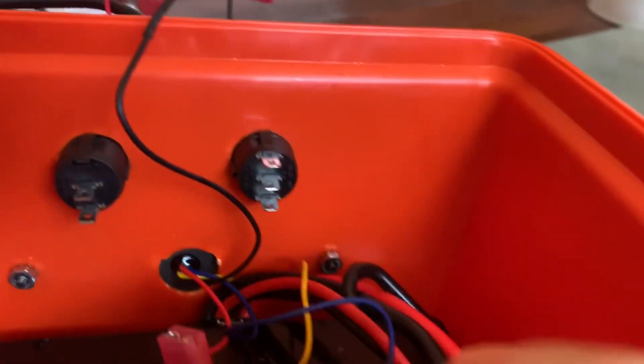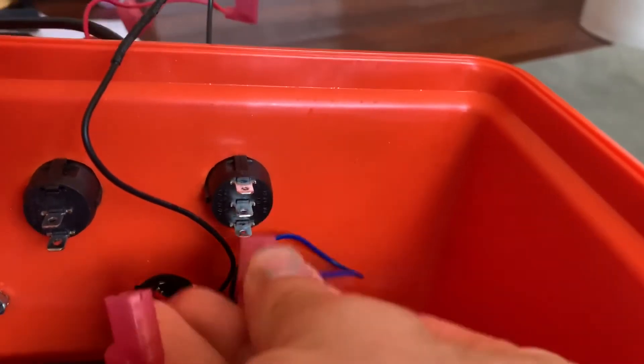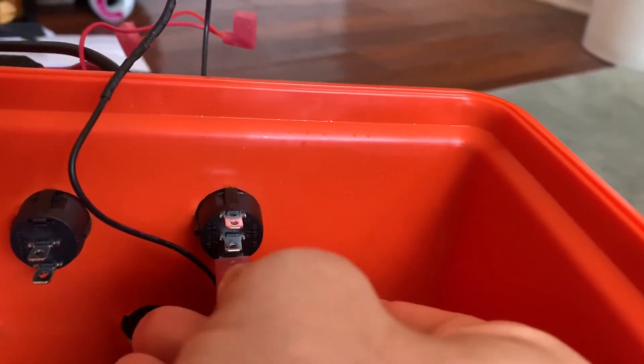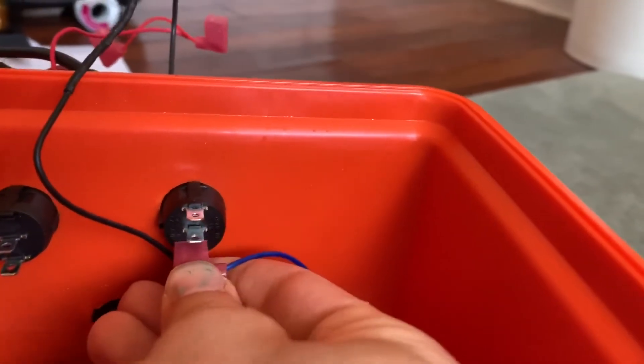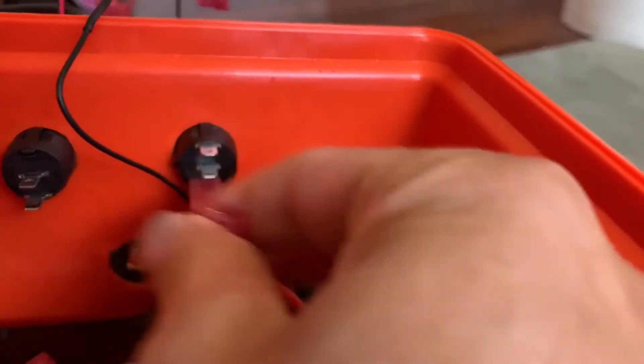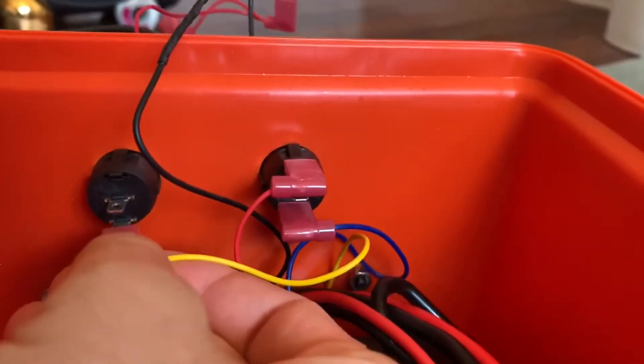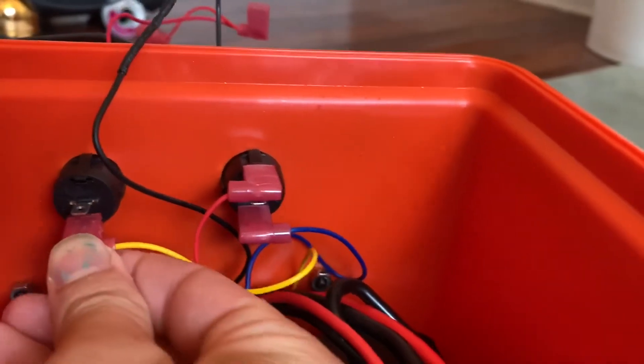Okay, so we're going to take the blue wire, and we're going to attach the blue wire to the bottom connector. We're going to take the red wire, and attach the red wire to the top connector. We're going to take the yellow wire, and attach the yellow wire down here to the bottom.